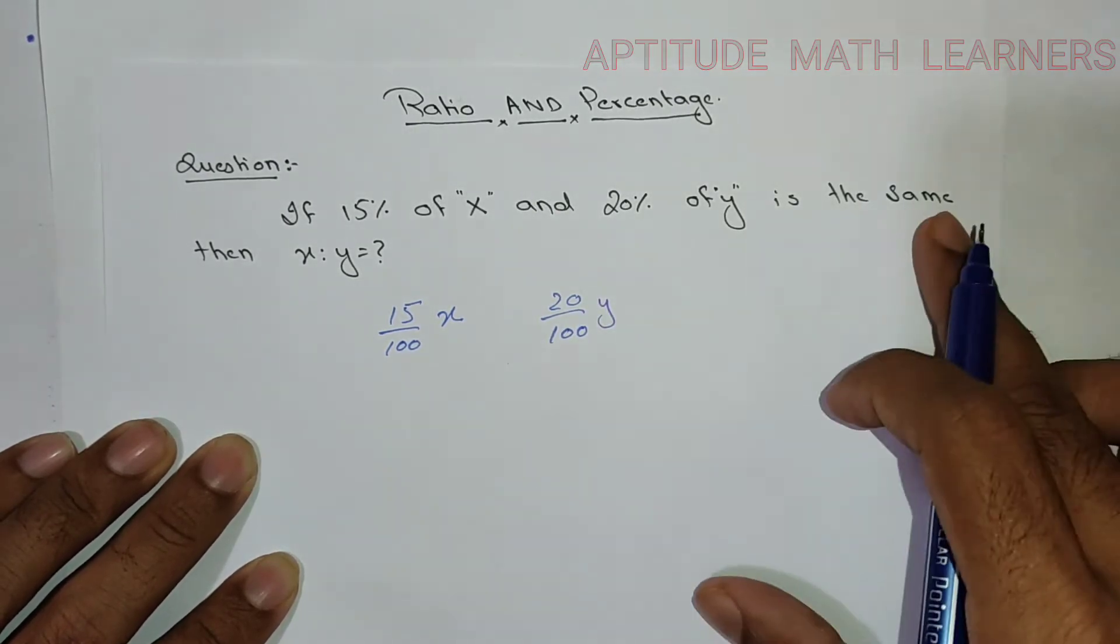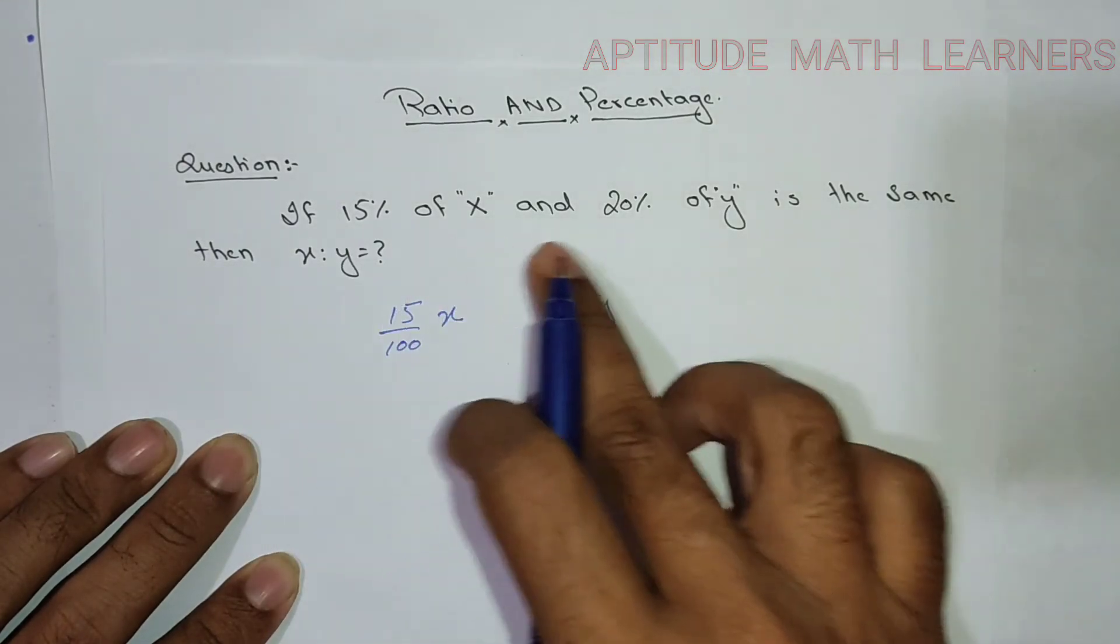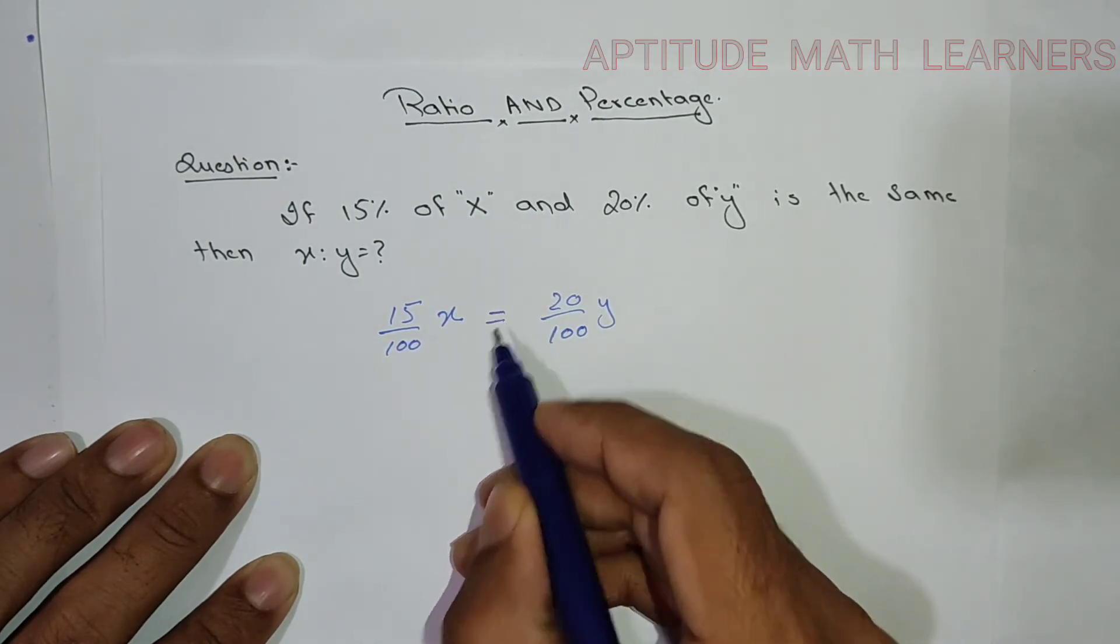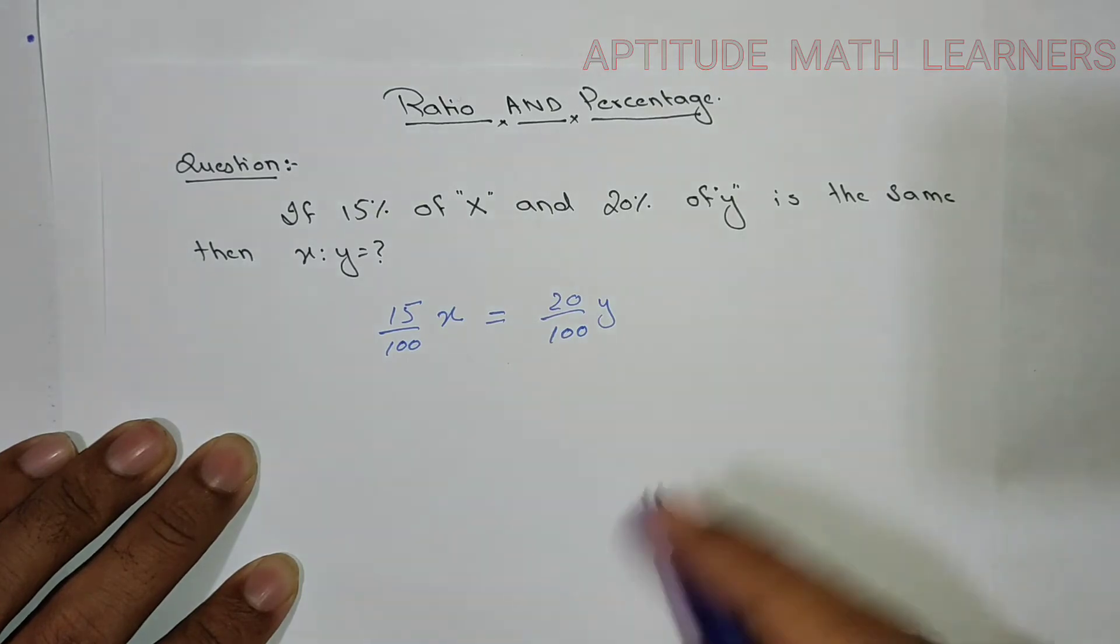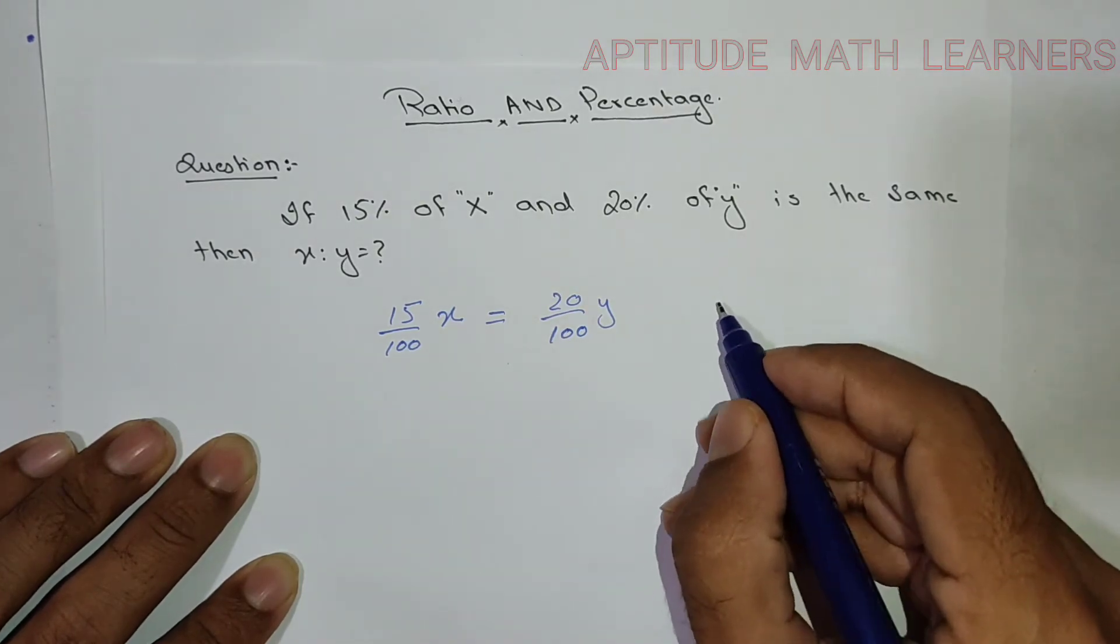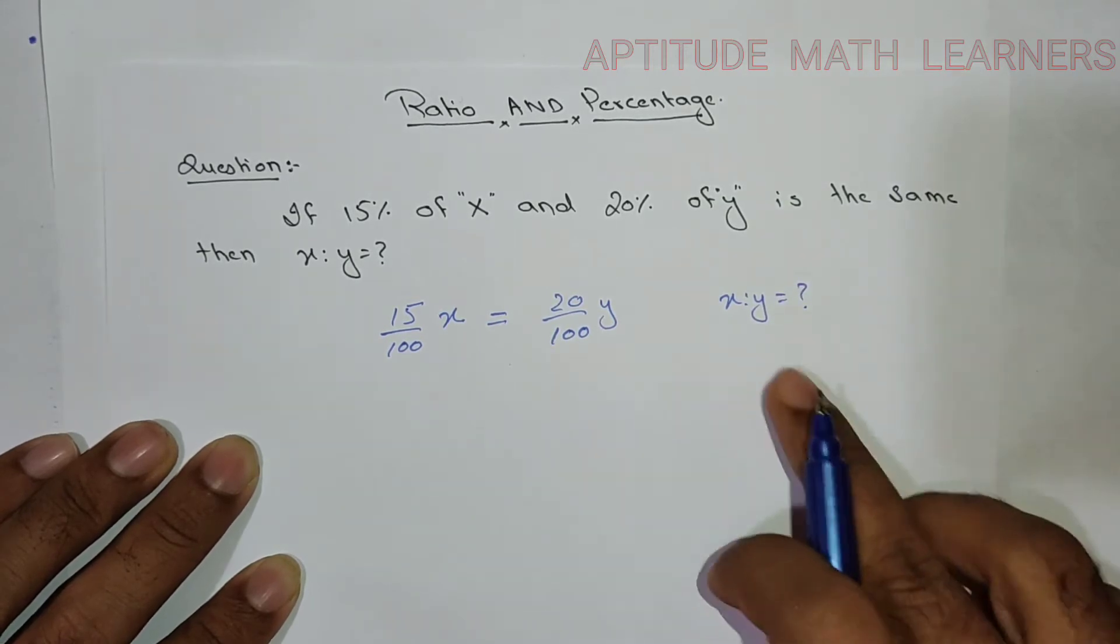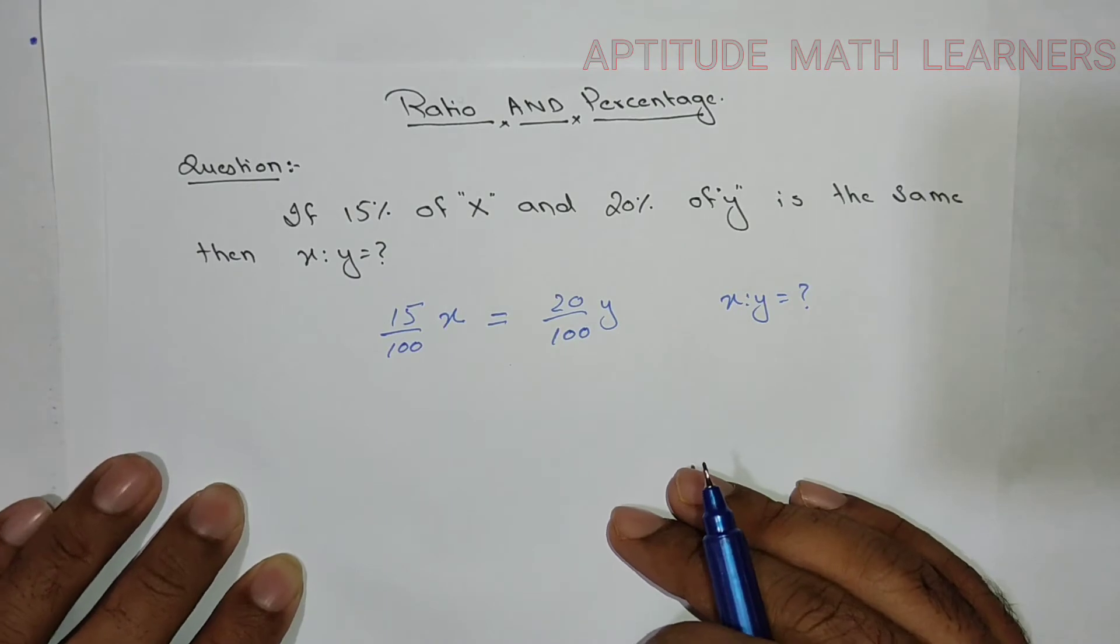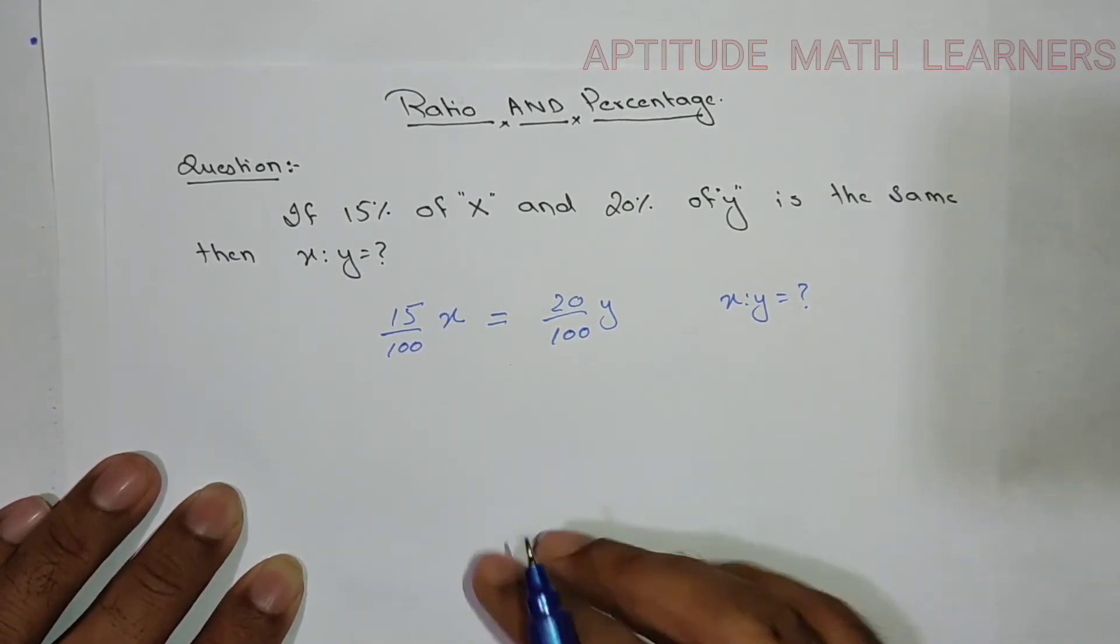It is the same, which means both 15% of x and 20% of y is the same. It means they are equal to each other. Then we have to find x ratio y. So what will be the value of x ratio y? Let's solve it out and get the answer.